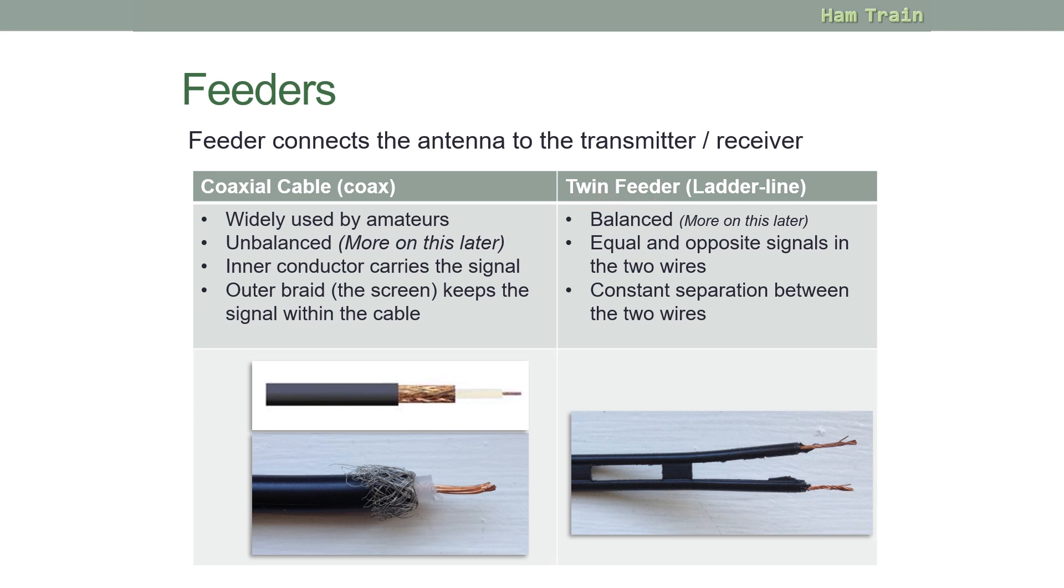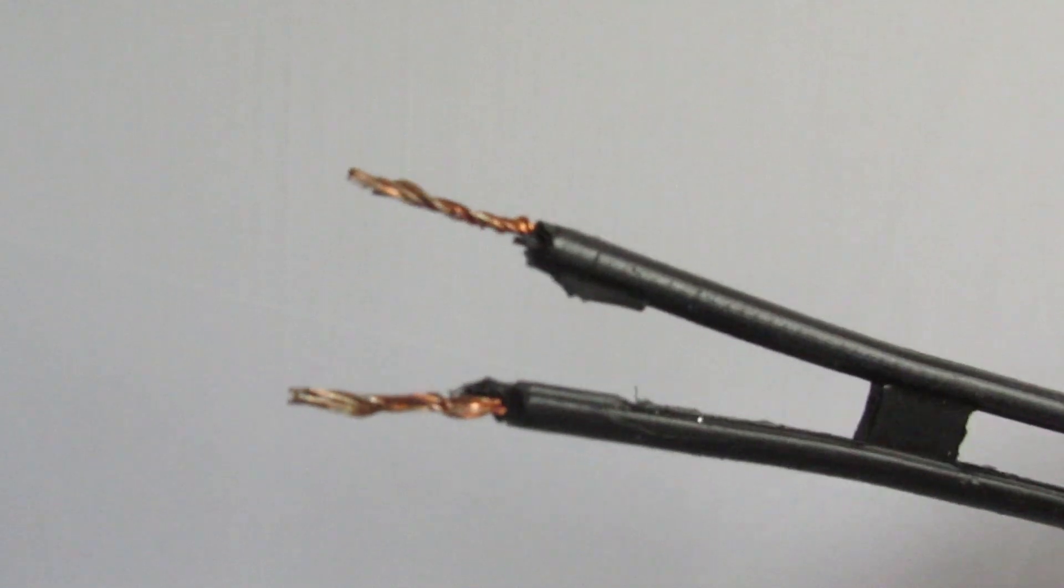On the right we have twin feeder. This is balanced. Again, more on this later. The two strands of the feeder here contain equal and opposite signals, and they are separated evenly by plastic spacers.